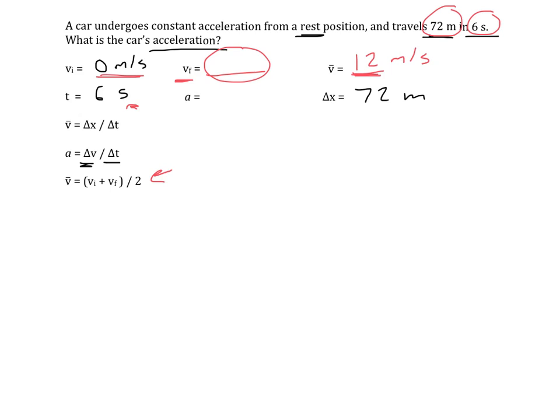But again, try to use a little bit of common sense here. To get an average of 12, if one of the numbers is 0, the other one is going to have to be 24. The average of 0 and 24 is 12. So the final velocity is 24 meters per second.